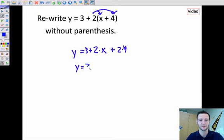which then we can simplify. Again, just copying this down, 3 plus 2x plus 8. We can combine the 3 and the 8 since they're both just a constant number. There are no variables there.